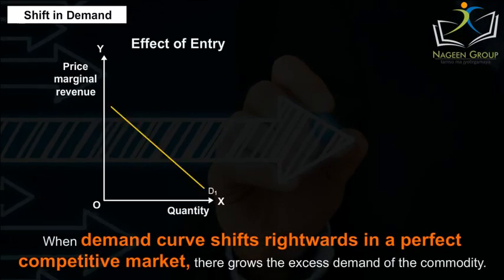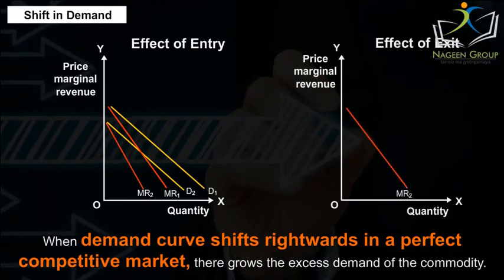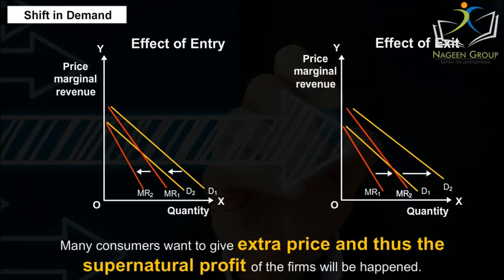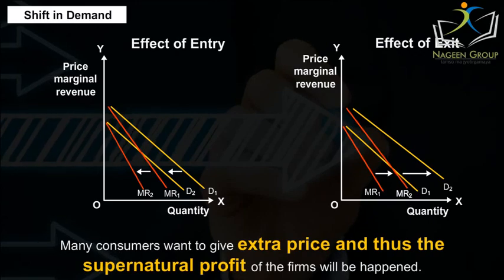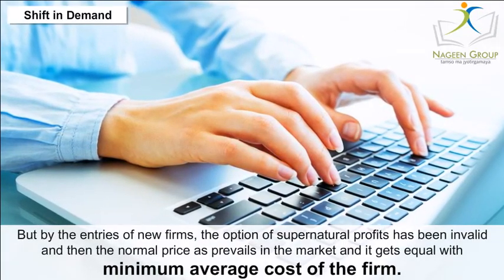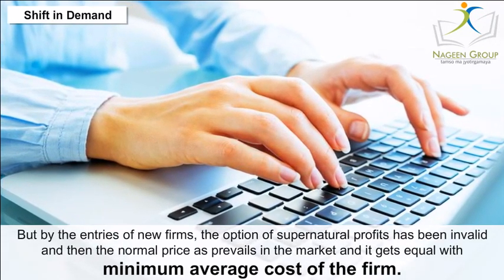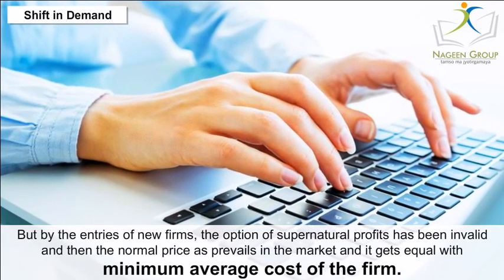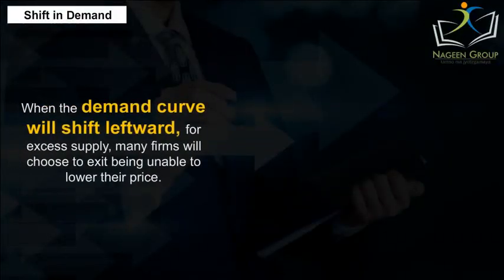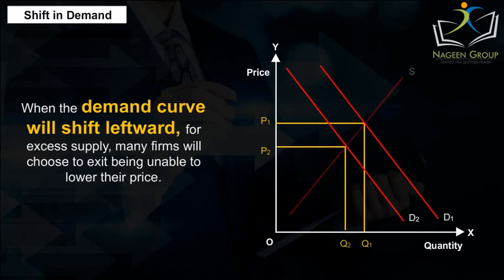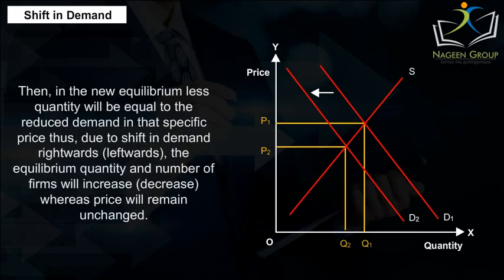Shift in demand with free entry and exit: When the demand curve shifts rightward, excess demand grows and consumers offer extra prices, creating supernormal profits for firms. New firms enter, eliminating supernormal profits, and the normal price prevails equal to the minimum average cost. When the demand curve shifts leftward, excess supply causes many firms to exit. In the new equilibrium, less quantity equals the reduced demand at that specific price. Therefore, due to a rightward or leftward shift in demand, the equilibrium quantity and number of firms increase or decrease, while price remains unchanged.